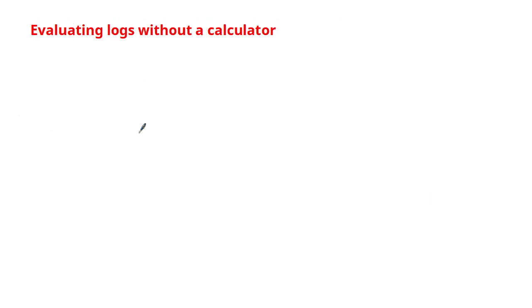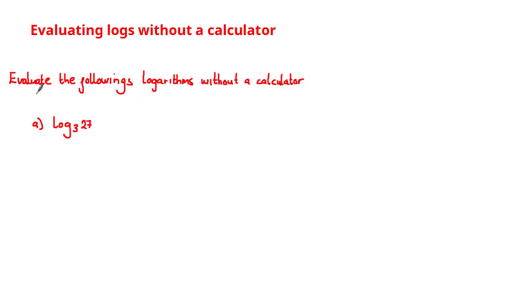For the last part of the tutorial we're going to use the relationship between power and log equations to evaluate logarithms without a calculator. The first one asks us to evaluate log base 3 of 27. We don't know this value, so we let the log equal some unknown x. Now we have a logarithmic equation and we can convert it into a power equation using the anti-clockwise trick, giving 3 raised to the power of x is equal to 27.